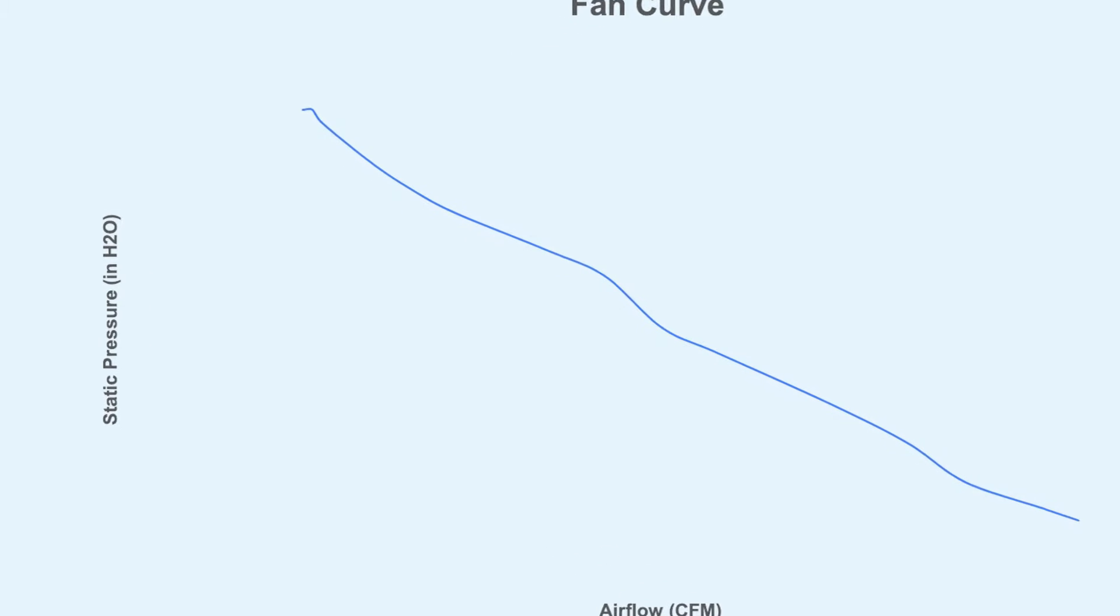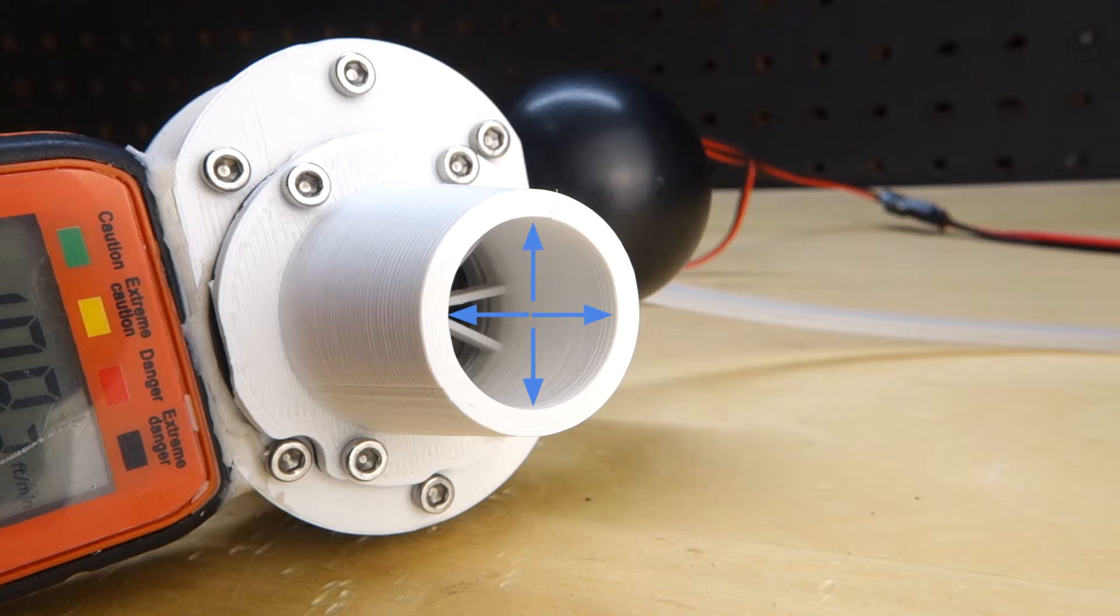Now that we visualize the airflow measured in CFM, let's look at the y-axis, which is the static pressure measured in inches of water. Now what happens is when the fan will blow air, the airflow will exert pressure on the walls of the adapter. And that is called static pressure.